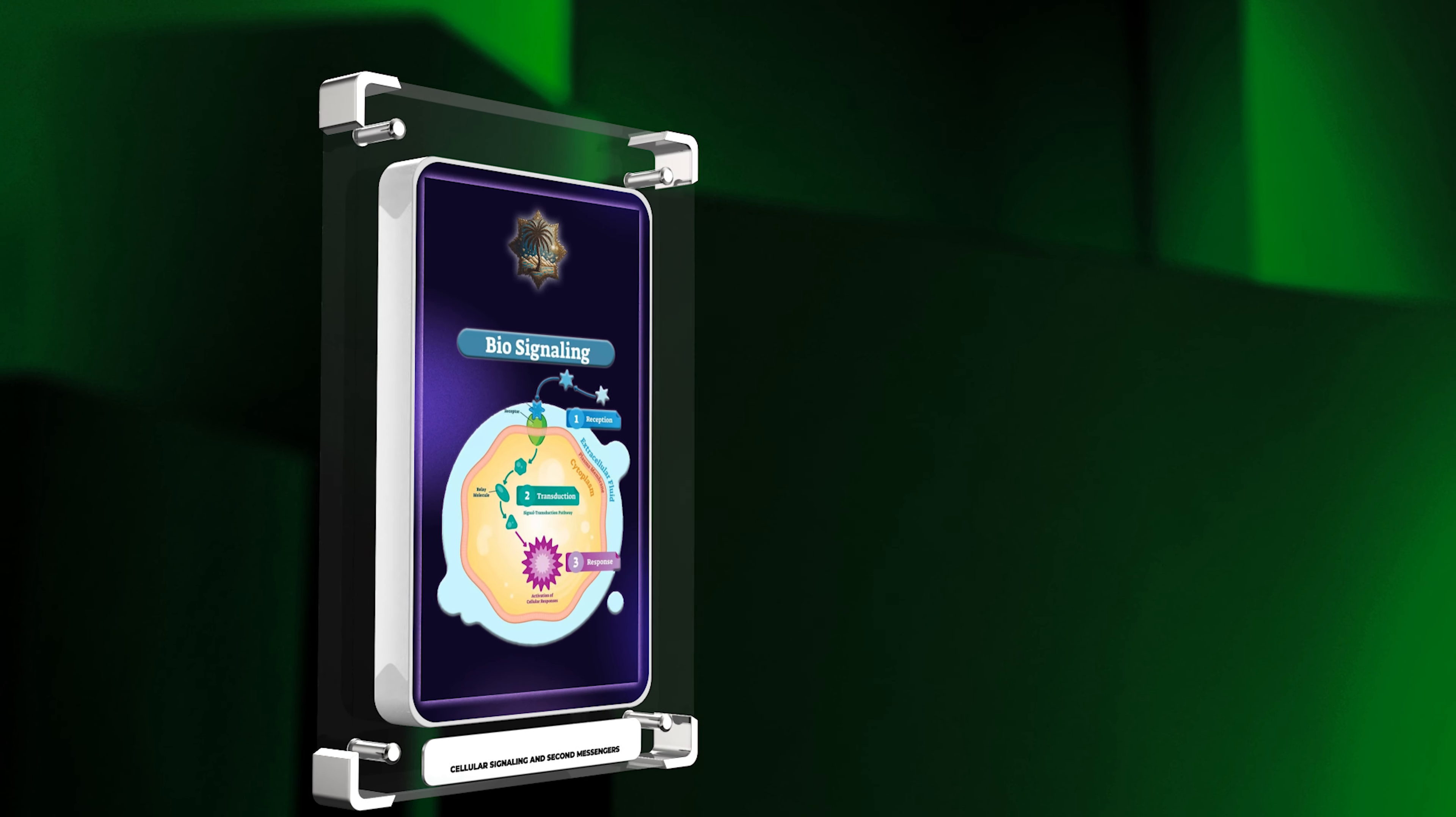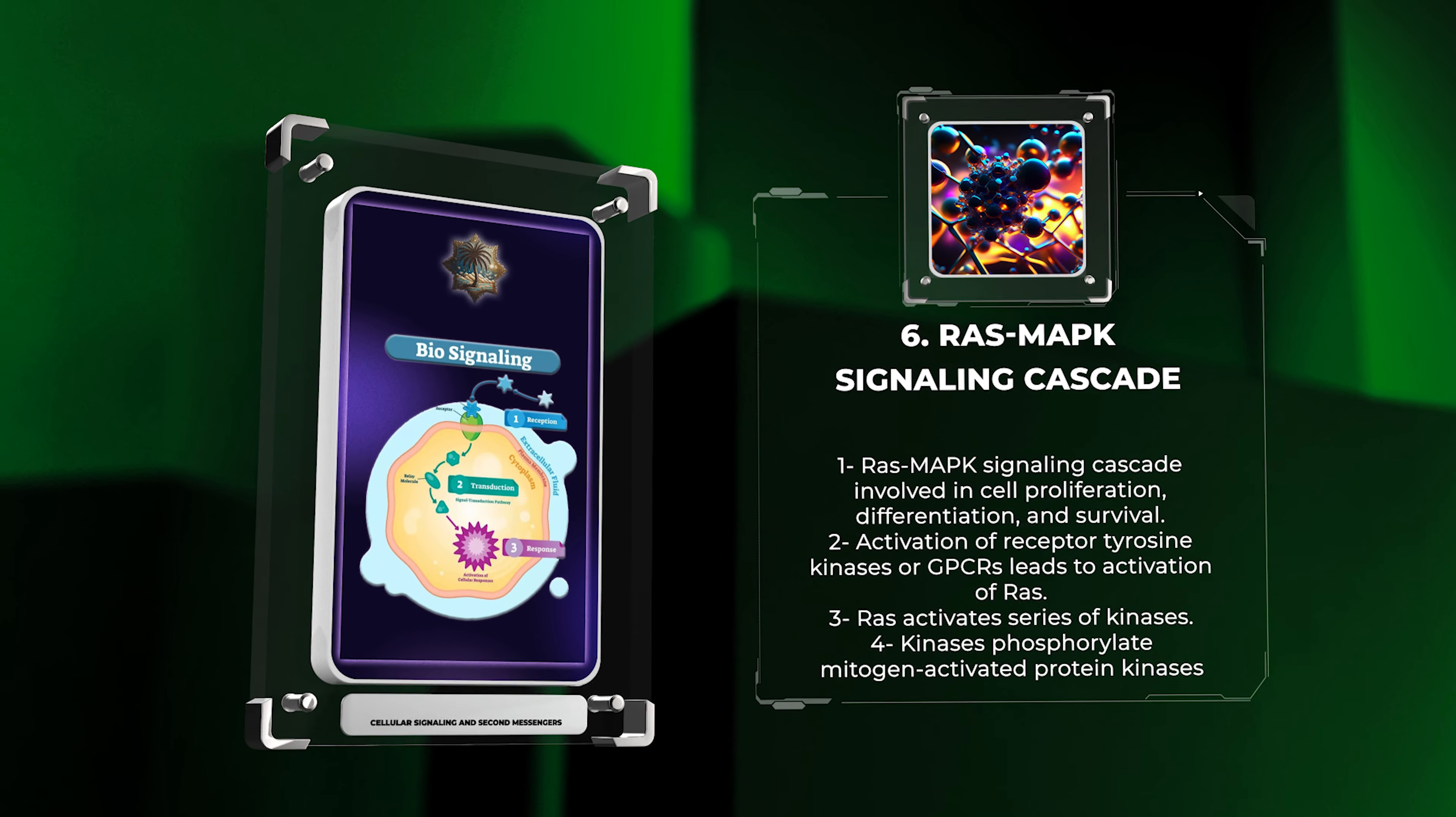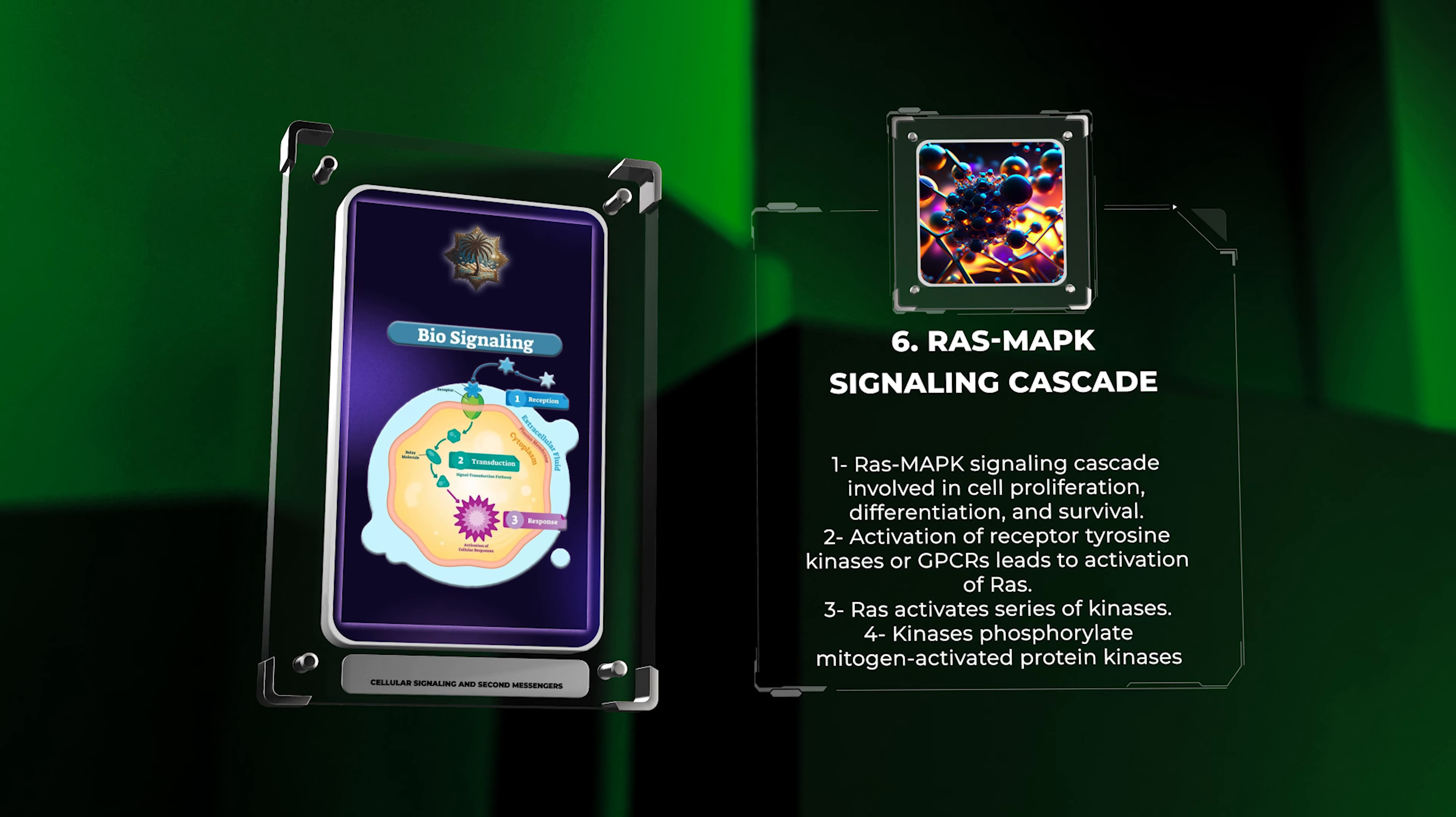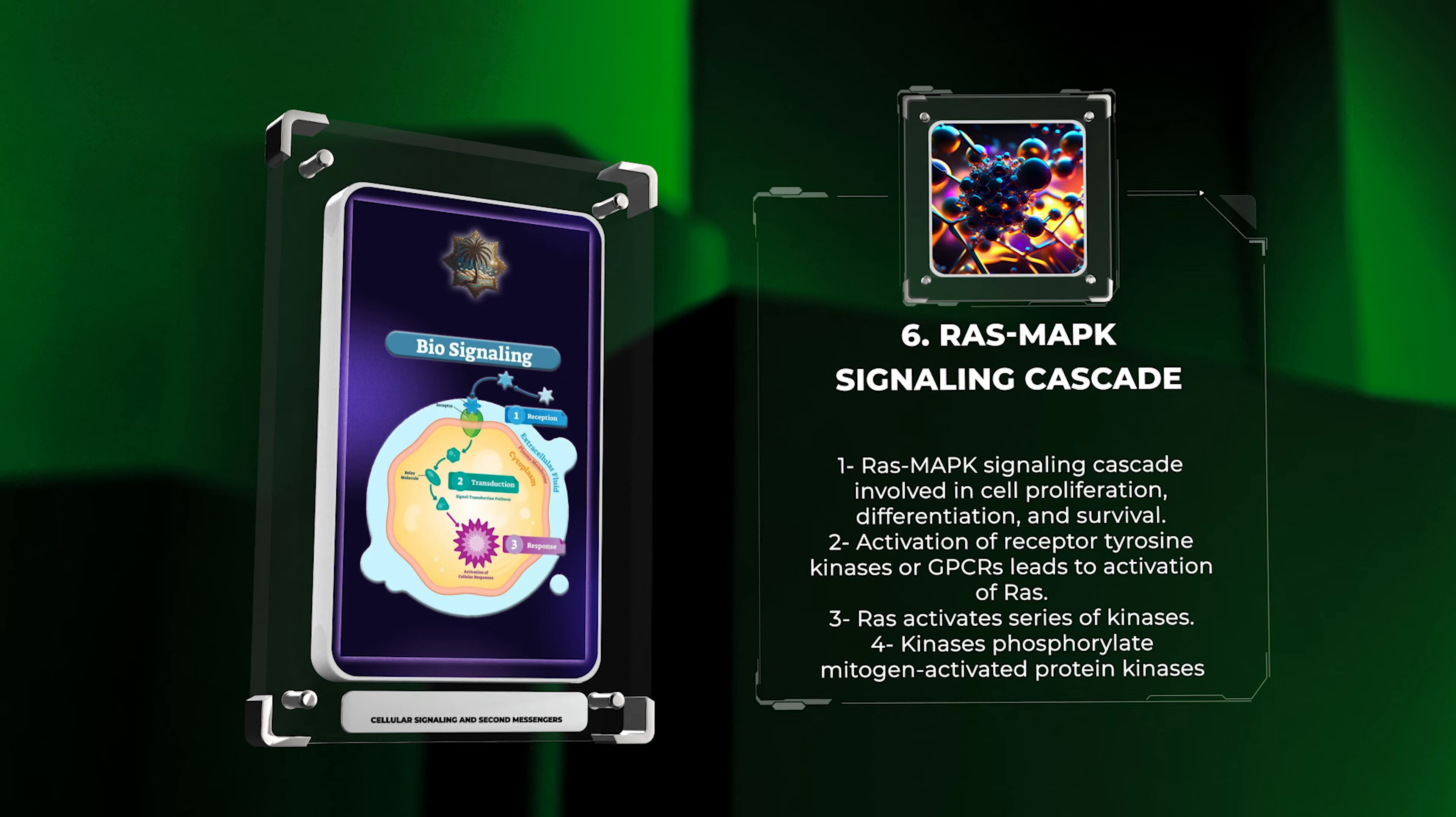The RAS-MAPK signaling cascade is an evolutionarily conserved pathway involved in cell proliferation, differentiation, and survival. Activation of receptor tyrosine kinases or GPCRs leads to the activation of RAS, a small GTPase. RAS activates a series of kinases, culminating in the phosphorylation of mitogen-activated protein kinases, MAPKs.